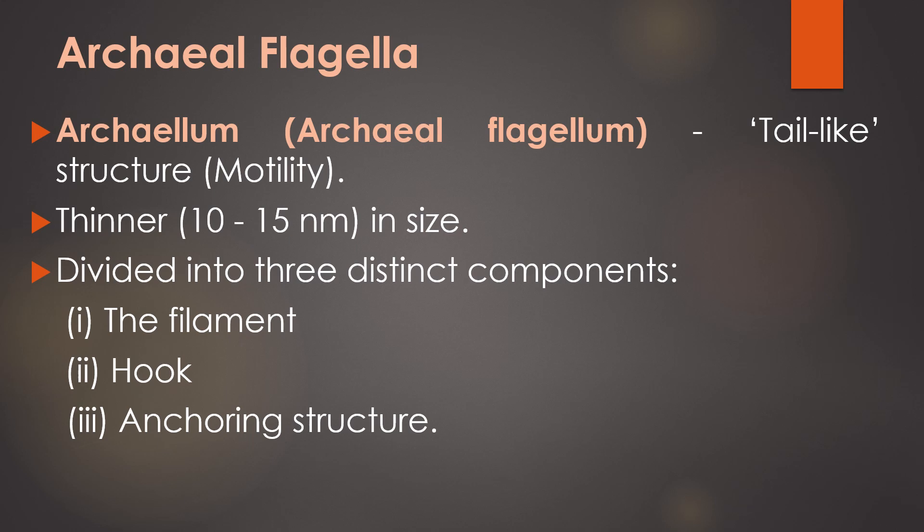Like bacteria, the structure of the flagellum can be divided into three components. The first one is the filament, the second one is the hook, and the third one is the anchoring structure. Each of these components is constructed of specific proteins, either encoded by genes residing within the flagellar operons or of currently unknown genes.